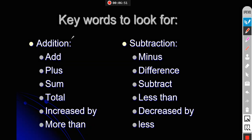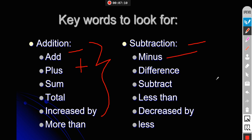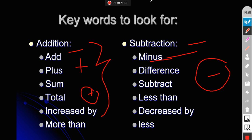There are a few keywords to remember. For addition, the keywords are: plus, sum, total, increased by, more than. For subtraction, the keywords are: minus, difference, subtract, less than, decrease by. When you see these words in a statement, you use the corresponding plus or minus sign to write the algebraic expression.